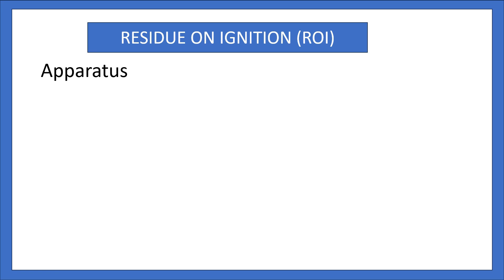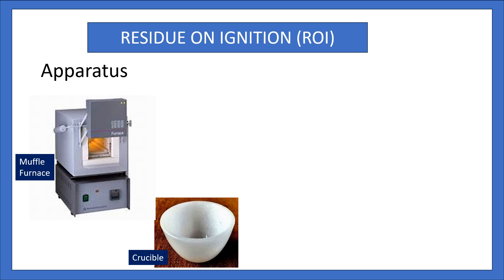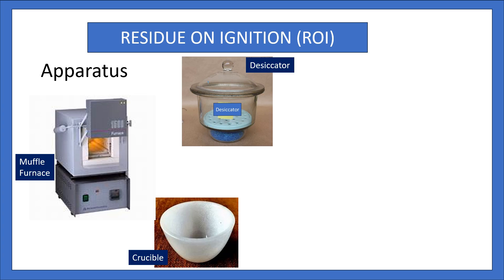Now let us see the apparatus and equipment required for the Residue on Ignition (ROI) test. First is the Muffle Furnace — it is used for igniting your sample at a very high temperature, i.e., 600 degrees Celsius. Second is the Crucible — it is a sample holder which holds your sample during charring as well as ignition. Third is the Desiccator — it is used to cool your crucible in a controlled environment.